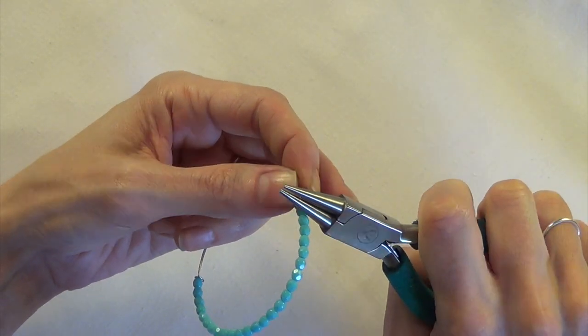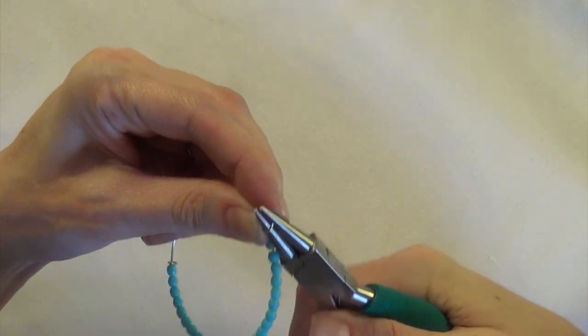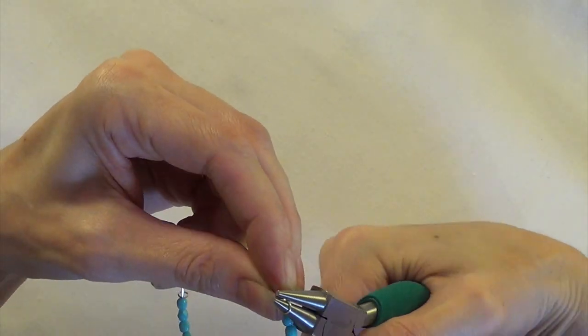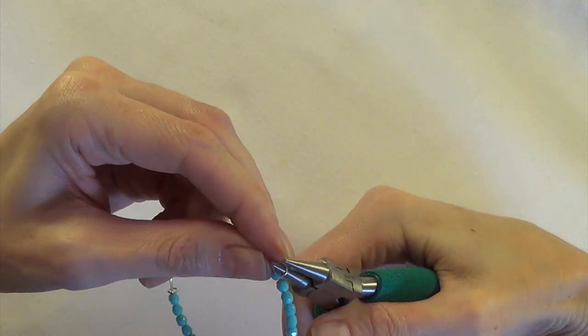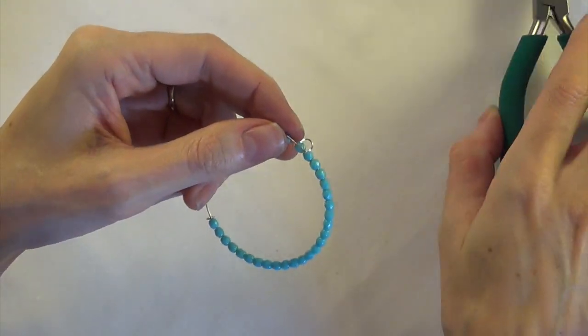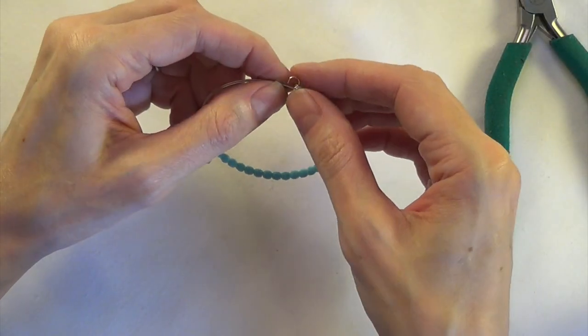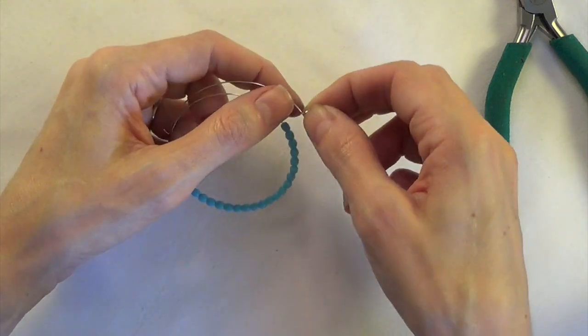So now I'm going to turn the loop in this end. And before I close this loop up all the way I'm going to go ahead and slide on all my charms since I've already got them made.